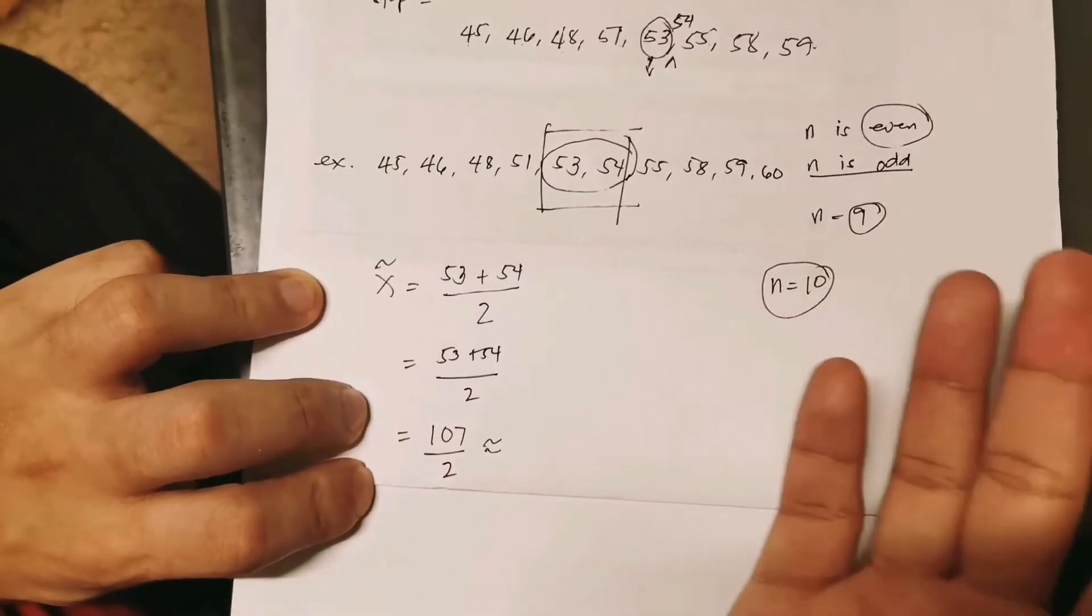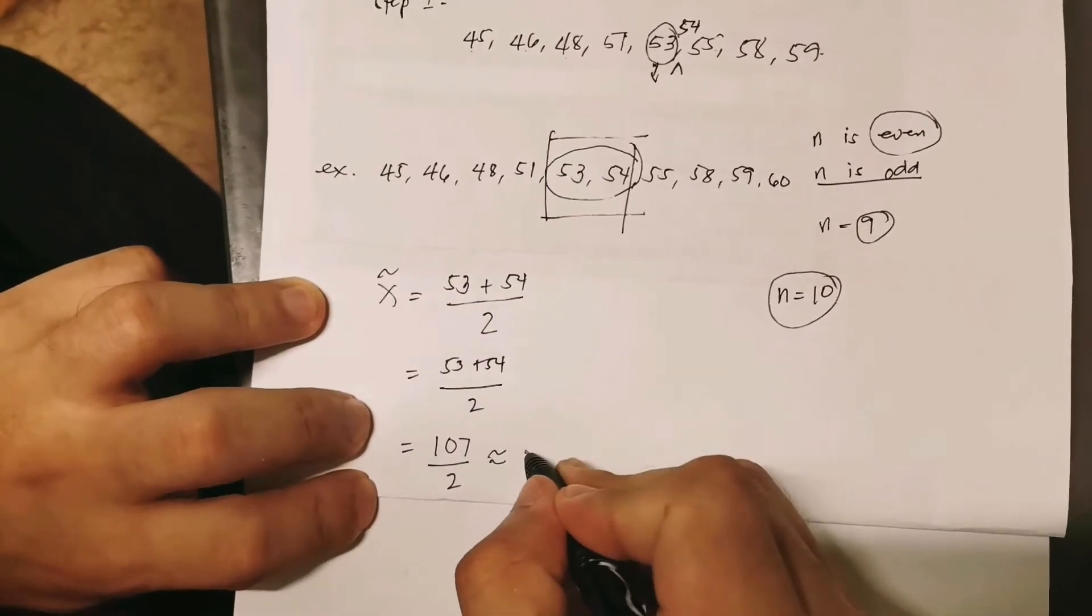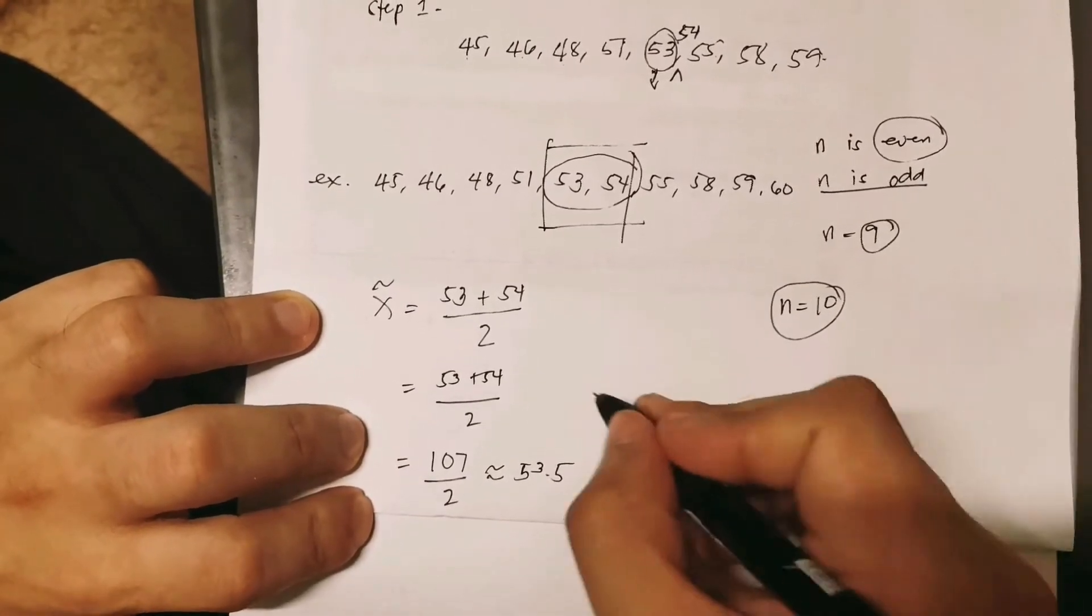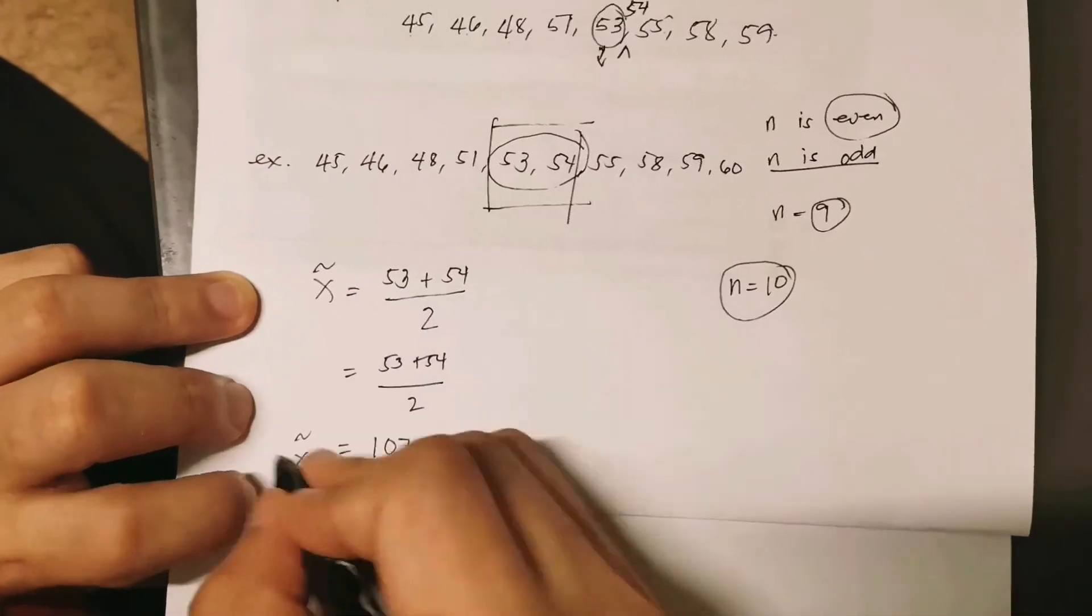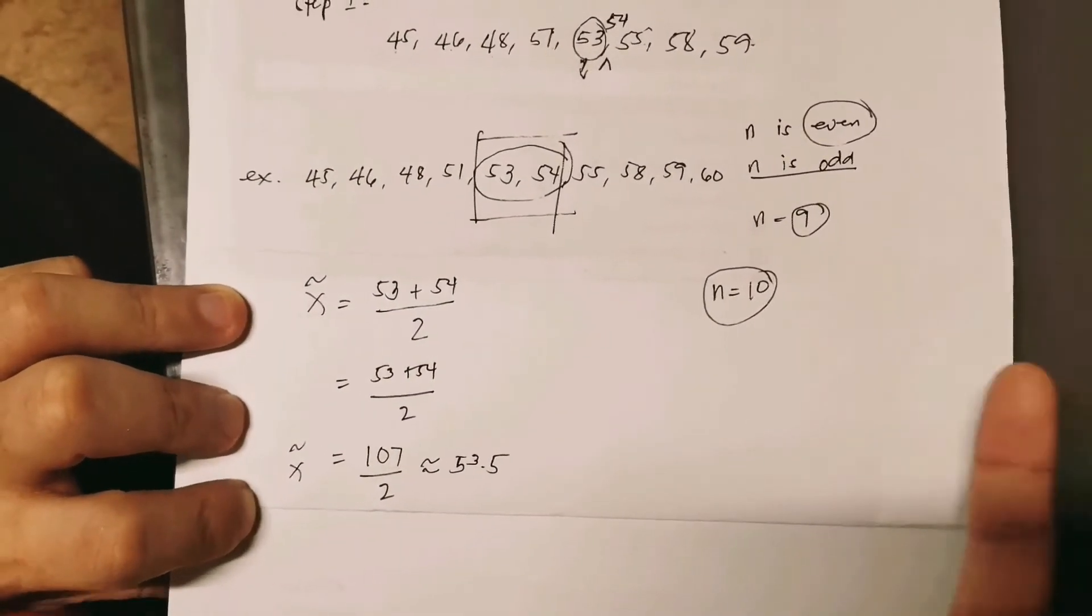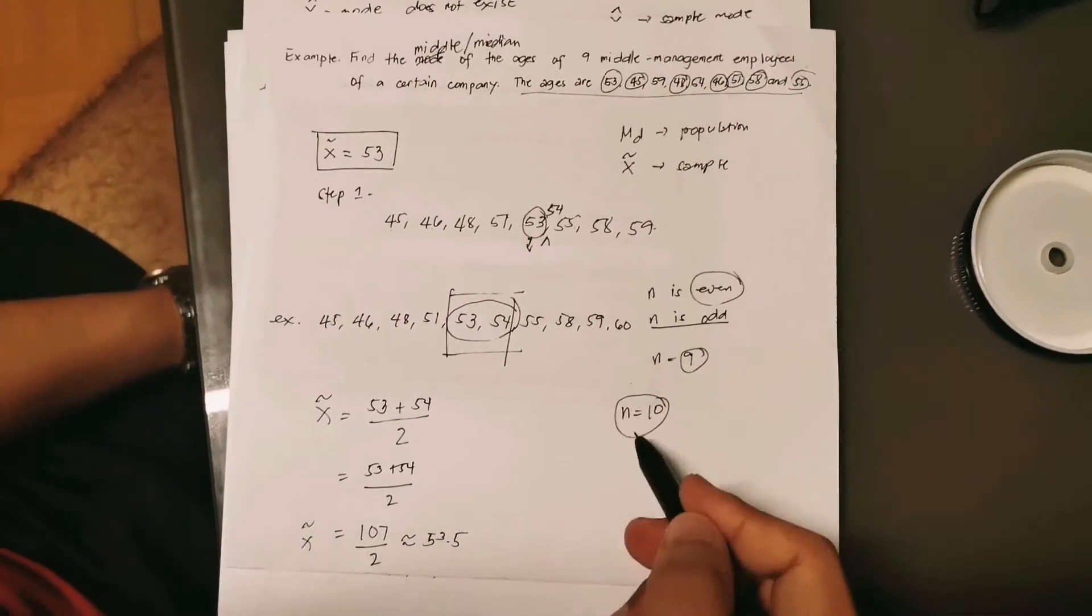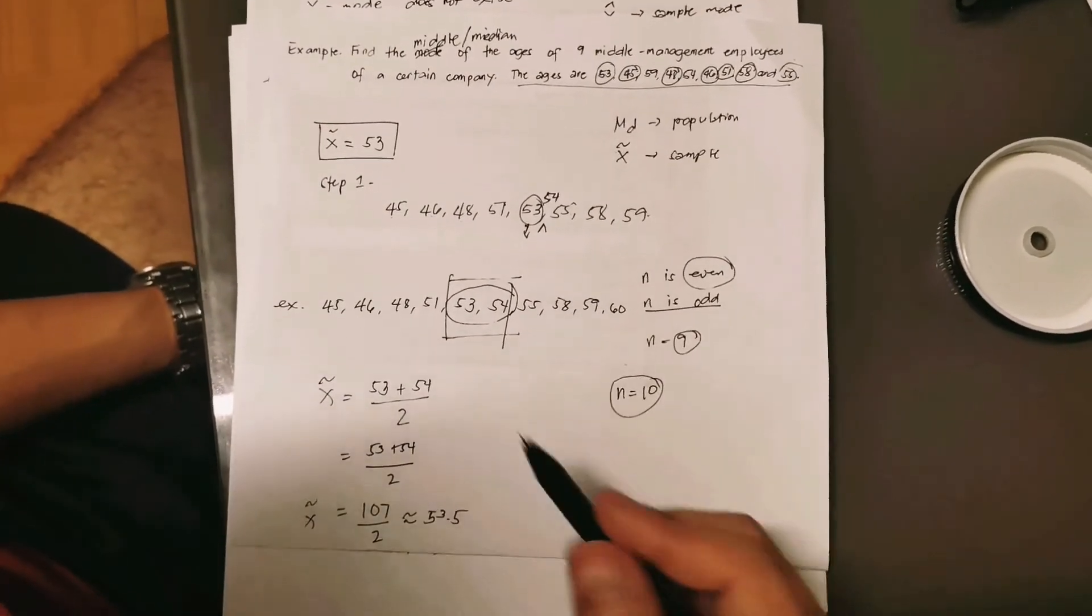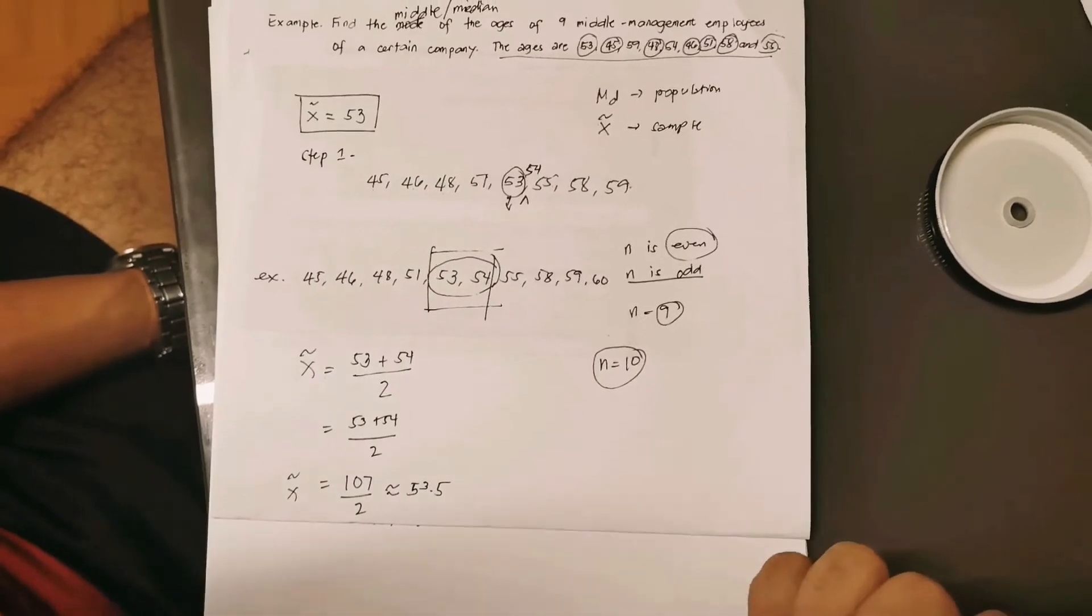We will add now the two middle scores: 53 plus 54 divided by 2. The result here is 107 over 2. If we are going to get the quotient of 107 divided by 2, that is 53.5. In other words, our median for this dataset is 53.5. The middle age of the 10 middle management employees of the certain company is 53.5 years old.